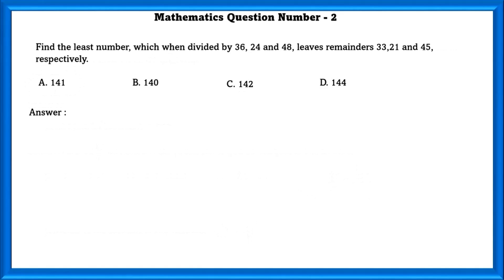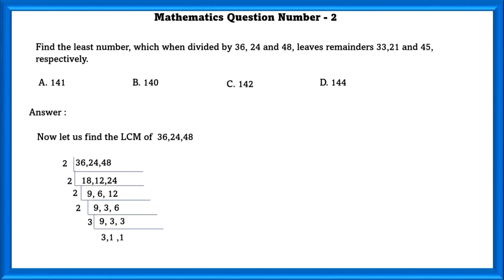Mathematics question number 2. Find the least number which when divided by 36, 24, and 48 leaves a remainder of 33, 21, and 45 respectively. First, let us find the LCM of 36, 24, and 48. The LCM of these numbers is 144.